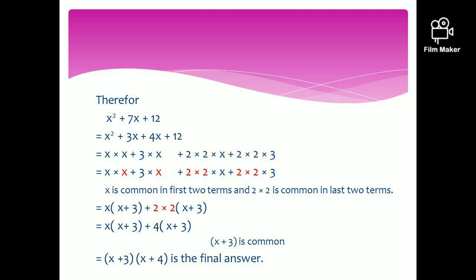Therefore, you can split the individual terms: x squared as x times x, 3x as 3 times x, 4x as 2 times 2 times x, and 12 as 2 times 2 times 3. When writing the factors of individual terms, try to write with the minimum number of factors — writing 12 as 2 times 2 times 3 rather than 2 times 6 helps you see the common terms more easily. You can see that x is common from the first two terms, x squared plus 3x, and 2 times 2 is common from 4x plus 12.